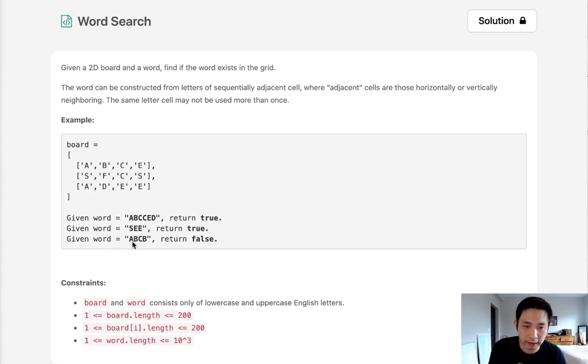If we're given a word like ABCB, we can see that one actually doesn't exist because we could create it by going ABC back to B, but that would be reusing a cell so that doesn't count.